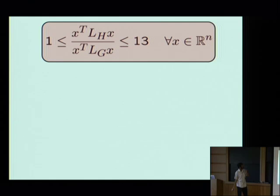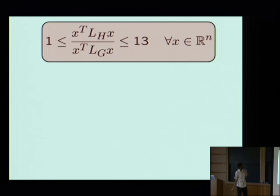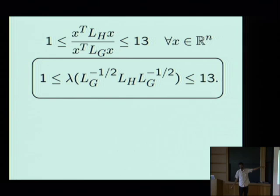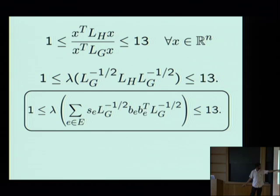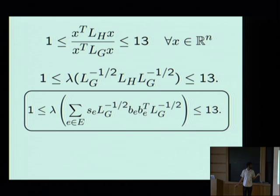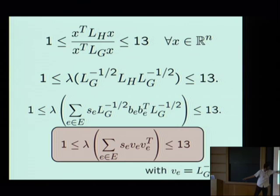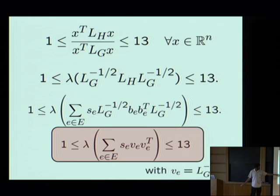Multiplying on the left and right by the square root of the inverse Laplacian of G, we see this is equivalent to showing all eigenvalues of L_G^{-1/2} L_H L_G^{-1/2} are between 1 and 13. Opening H with the outer product expansion and letting V_e denote L_G^{-1/2} B_e, we simply want to show there exists a sparse set of scalars S_e so that this weighted sum of outer products has eigenvalues between 1 and 13.